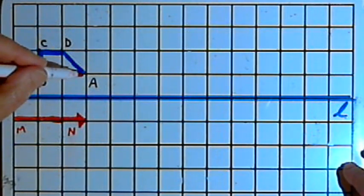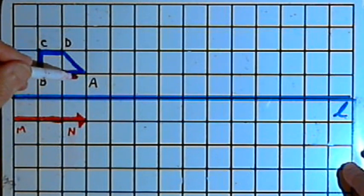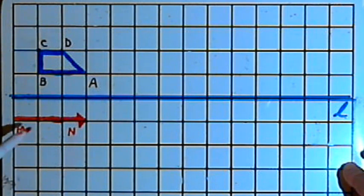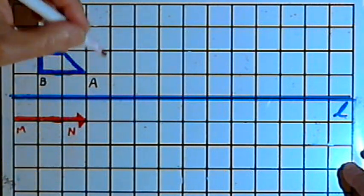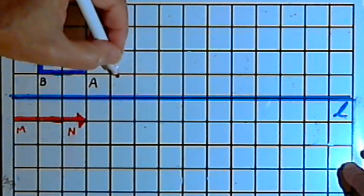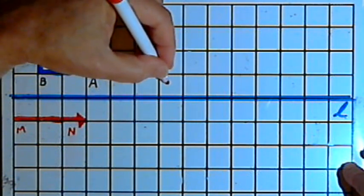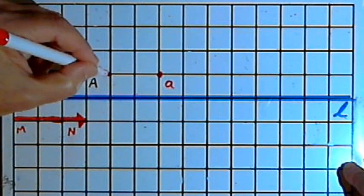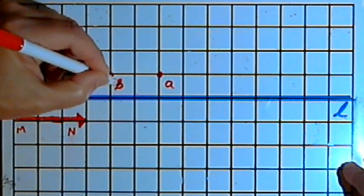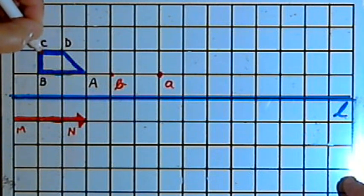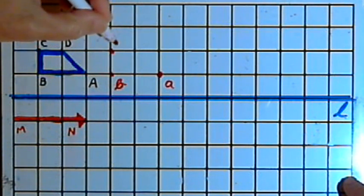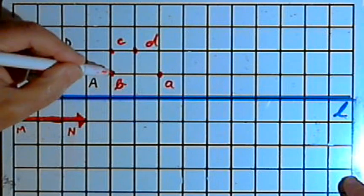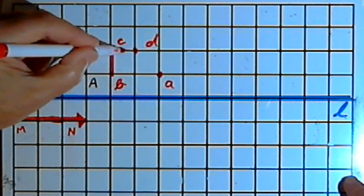So what I'm going to do is first the translation and then the reflection. I'm going to translate quadrilateral ABCD. The vector tells me to move each of the points three units to the right. So I'll take point A and move that one, two, three units, and I'm just going to call this point small a. Then I'll take point B and move that three units and I'll call that small b. I'll take point C and move that three units. That'll be small c. And point D will become small d. And now I'm going to connect those four points.